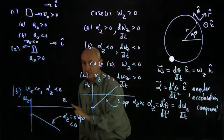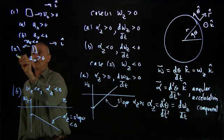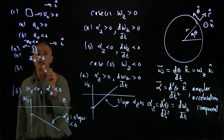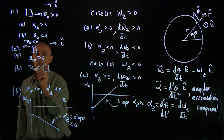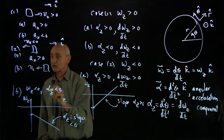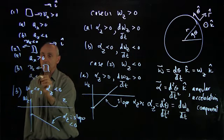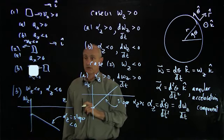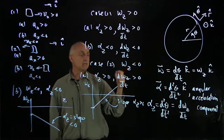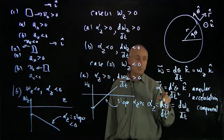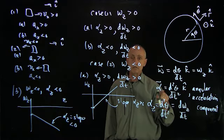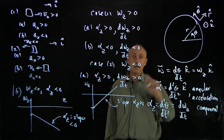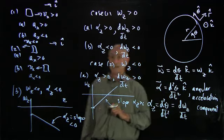And for our linear case, again, this corresponds to an object moving in the negative x direction. And a_x is negative. It's moving faster in the negative x direction. And so these are the cases of how we analyze the various cases for angular acceleration and angular velocity.